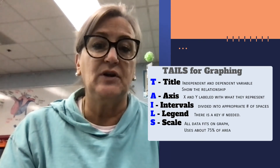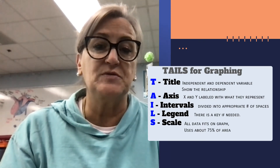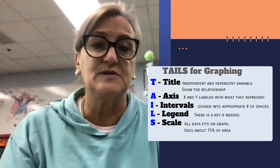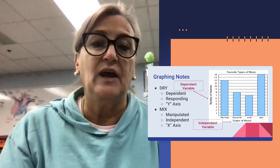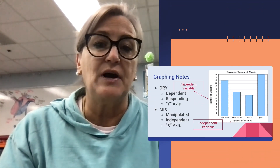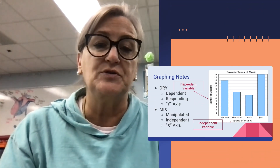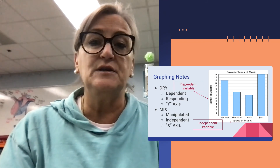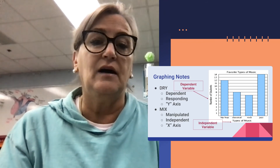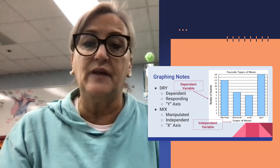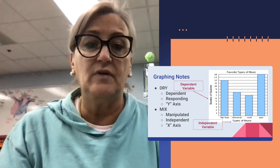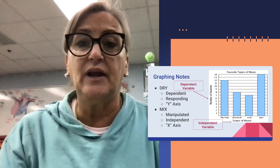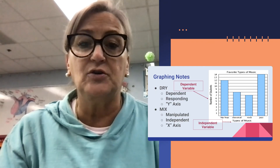So there's all of it together. Remember to use at least 75% of the space. And here's the DRY MIX reminder: dependent goes on the Y axis, independent goes on the X axis. Make sure that you review this presentation before creating your own graph.